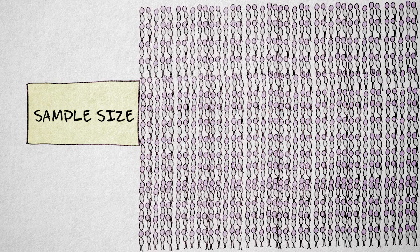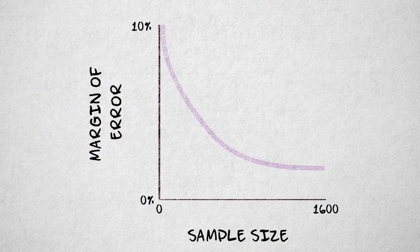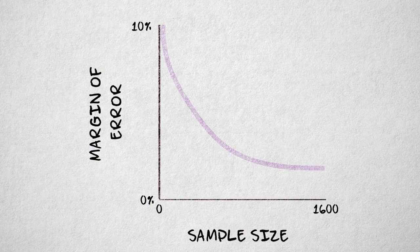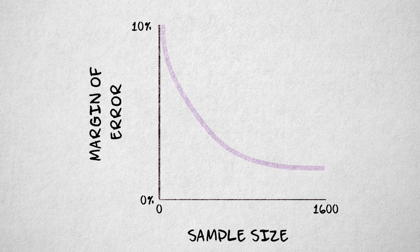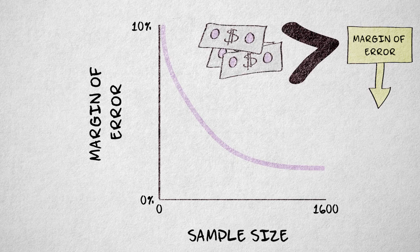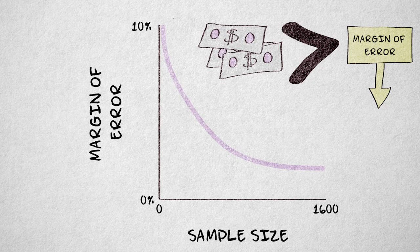This is because as the sample size grows, the decrease in the margin of error becomes smaller and smaller. At a certain point, the cost of collecting more elements outweighs the decrease in the margin of error.